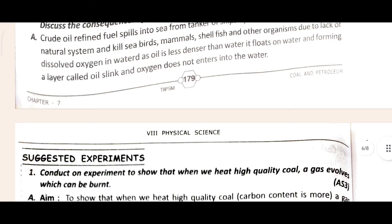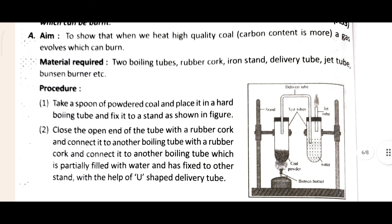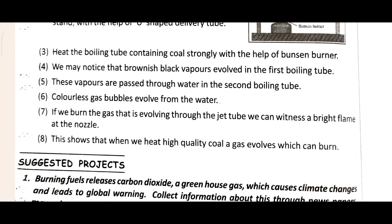Now come to the suggested experiment. The first question asks you to conduct an experiment to show that when coal is heated, a high quality of coal gas is evolved which can be burned. The aim, material required, and procedure are all given here. I hope this one is clear for you.